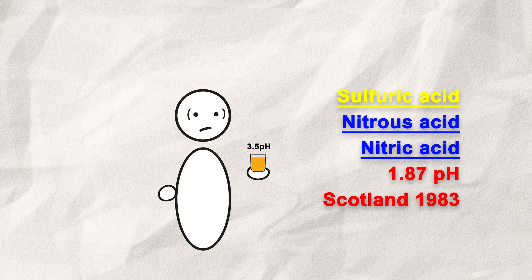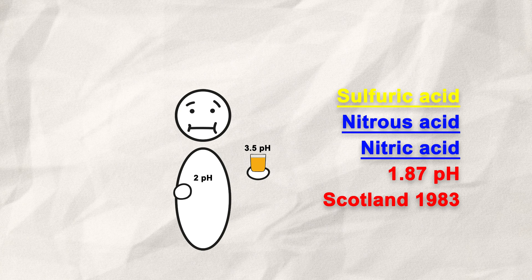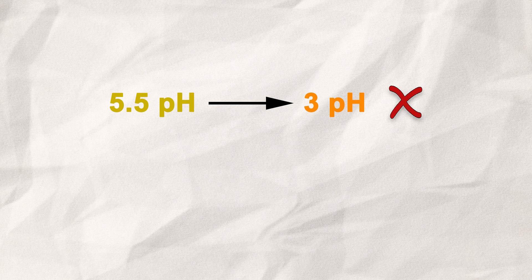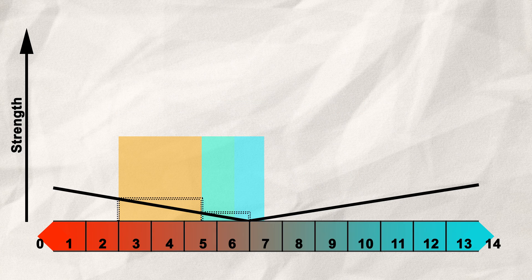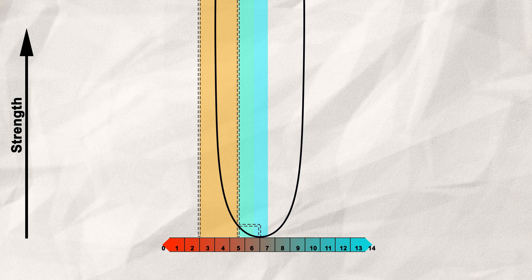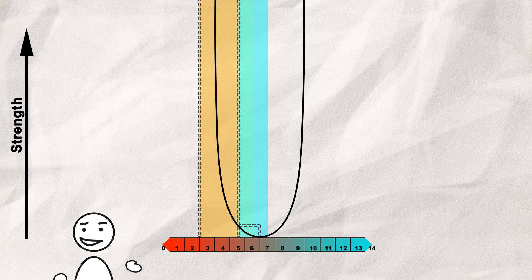But is a drop from 5.5 to 3 really such a big deal, if a change from 7 to 5.5 is not? Let's take another look at the pH scale. The pH value isn't measured linearly. Instead, it is logarithmic, and that means that the strength of the acid, or base, increases tenfold each step. So in reality, the curve should look like this. Now pH 3 looks kind of crazy.